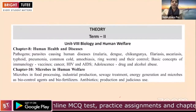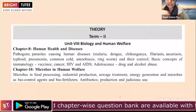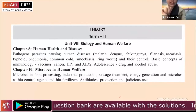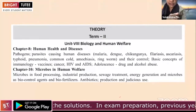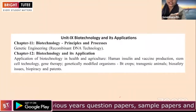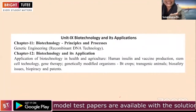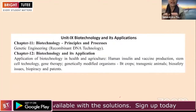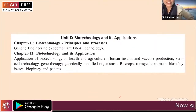Unit 9 covers Biotechnology and its Application, which has two chapters: the first is Biotechnology — Principles and Process, and the second is Biotechnology and its Applications. This unit carries 11 marks.